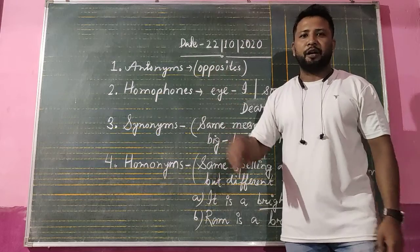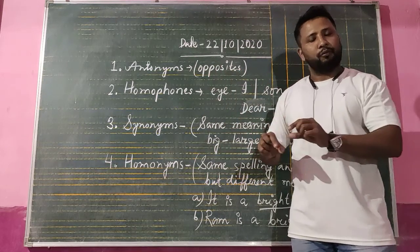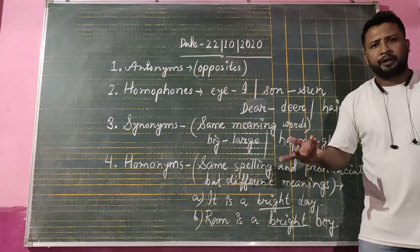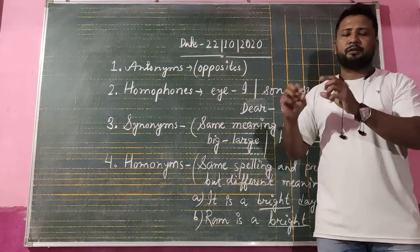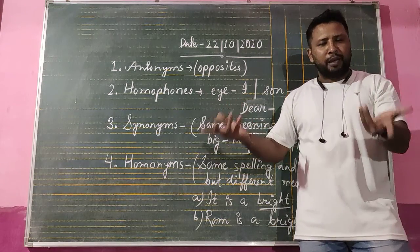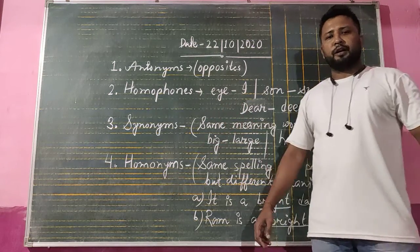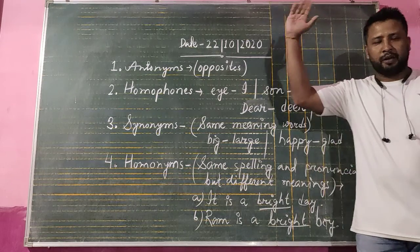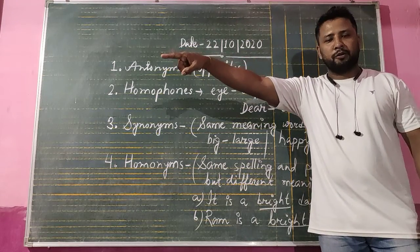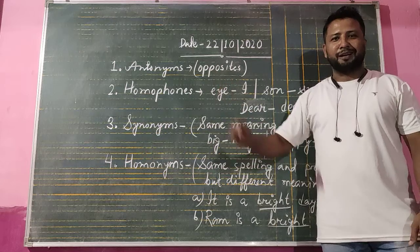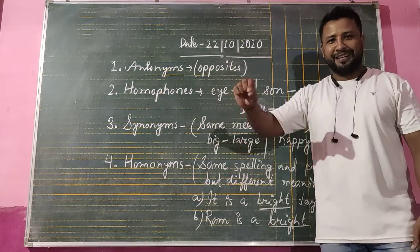First point: antonyms. Now, what are homophones? These are words that have the same pronunciation but different spelling and different meaning. For example: R-I-G-H-T means 'right' and W-R-I-T-E means 'write.' Same pronunciation, but 'right' means your answer is correct — 'your answer is right' — and 'write' means to write something down, like 'write the answer.'